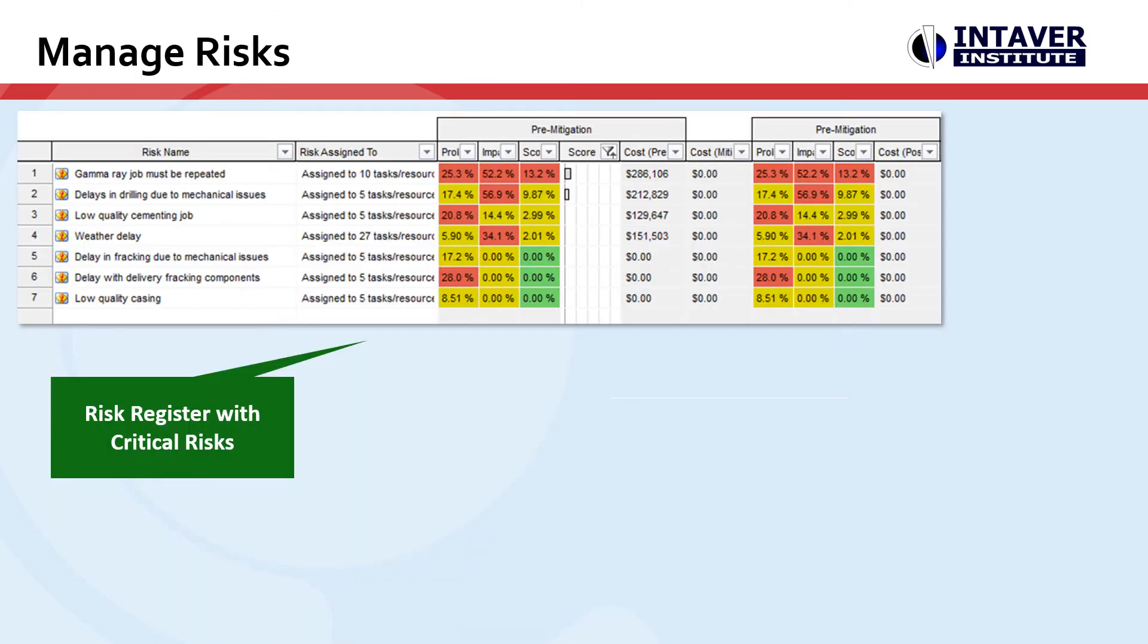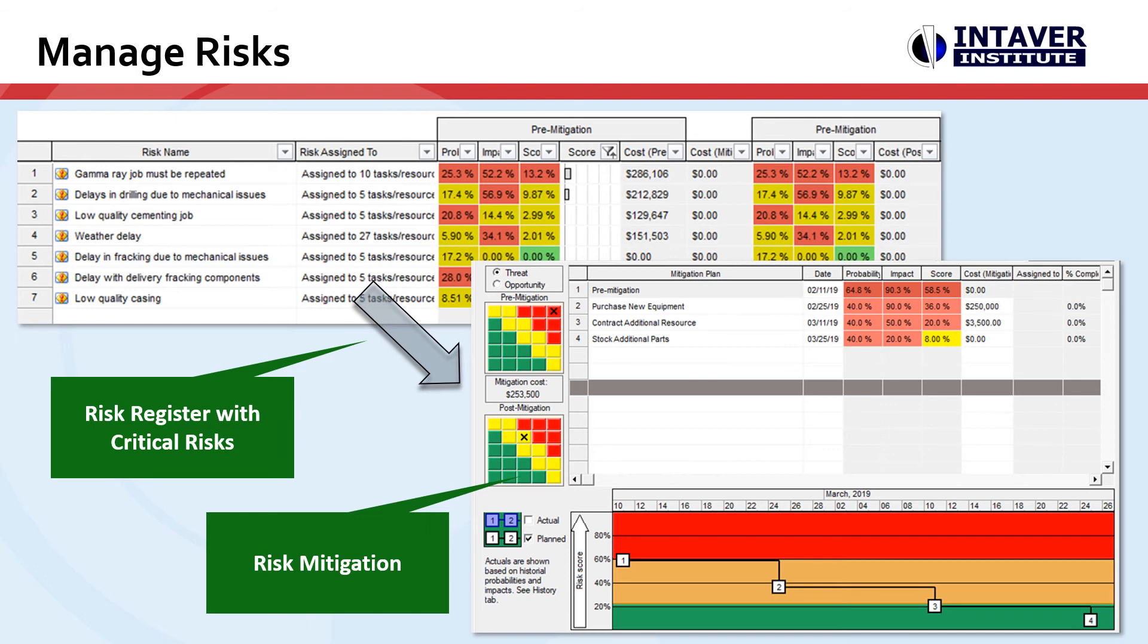Another output is the ranking of risks based on risk scores. We'll take those risks and manage them in various ways. One method is mitigation.